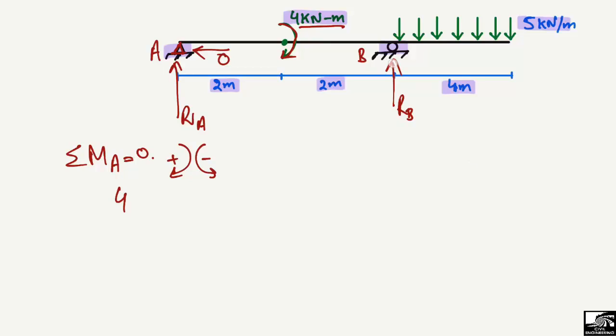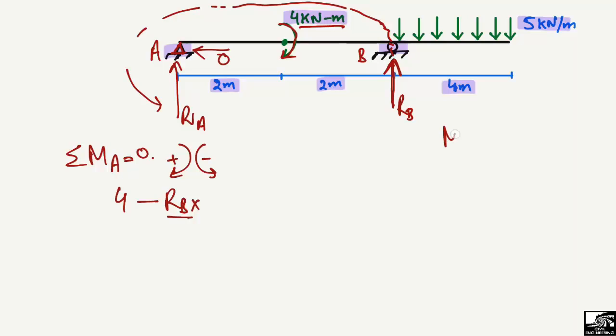Taking the summation of moments at point A, the reaction RB creates a moment about A. Since RB acts upward, it creates an anti-clockwise moment about A, so it is negative: −RB × 4 m (which is 2 m + 2 m, the perpendicular distance from B to A).